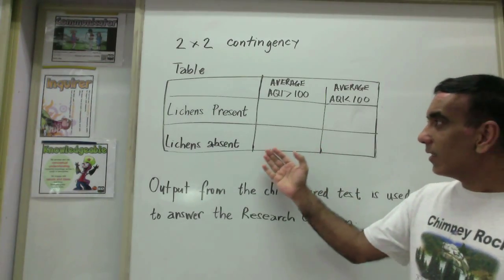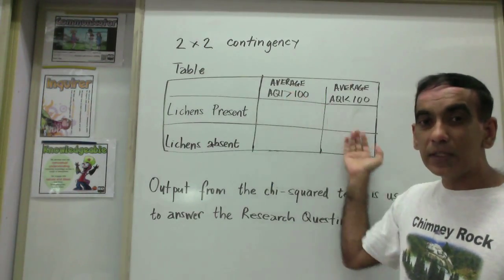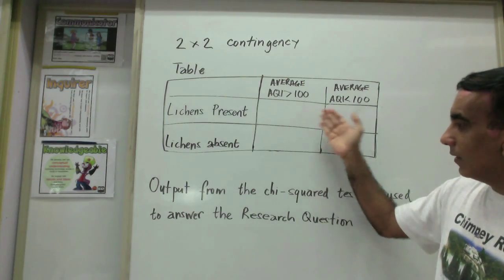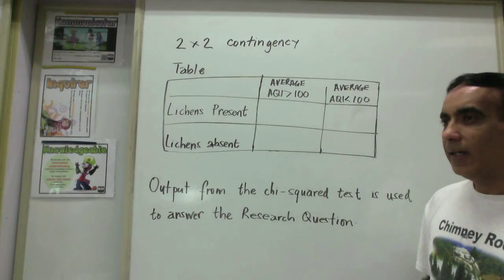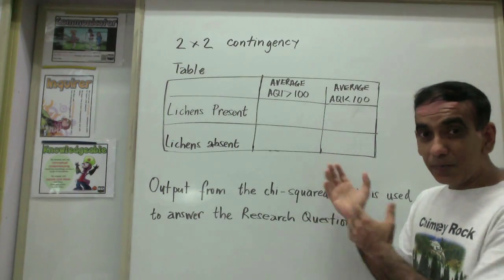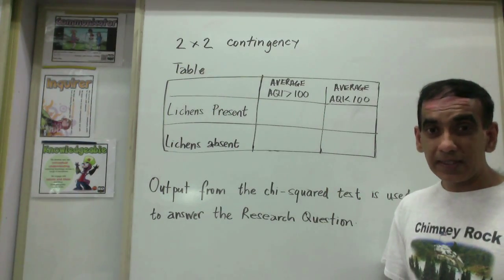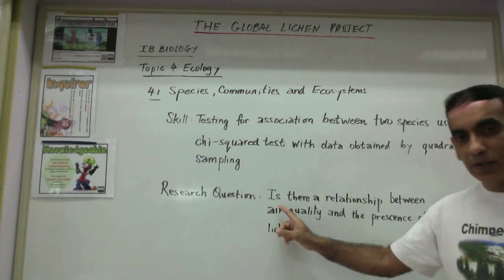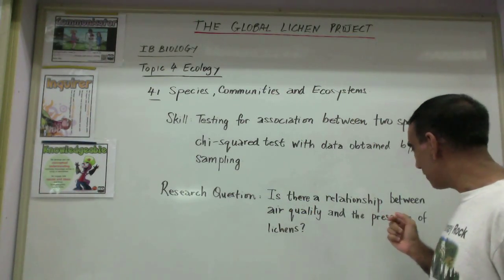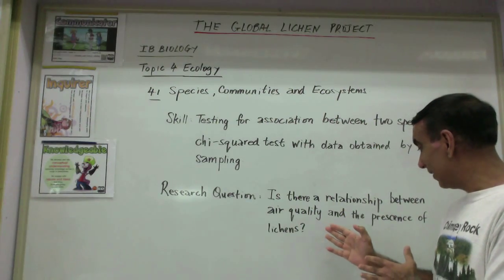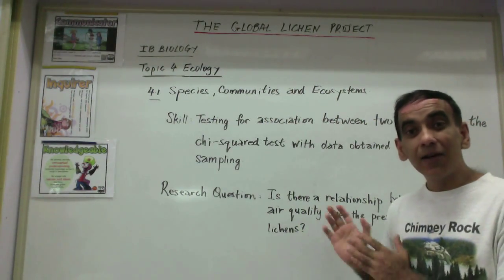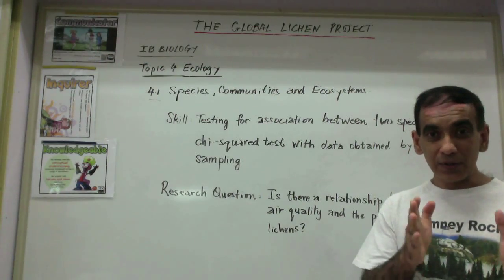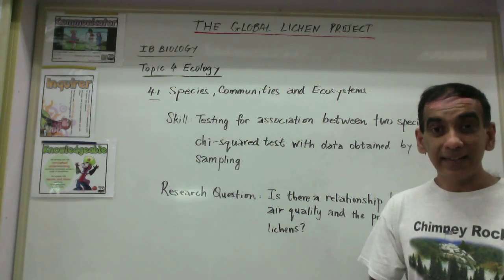Ultimately we will return to the chi-square test. We will set up a two-by-two contingency table, place data in the appropriate boxes, and the output from the chi-square test will help us answer: is there a relationship between air quality and the presence of lichens? I invite you all to join us on this global search for lichens.